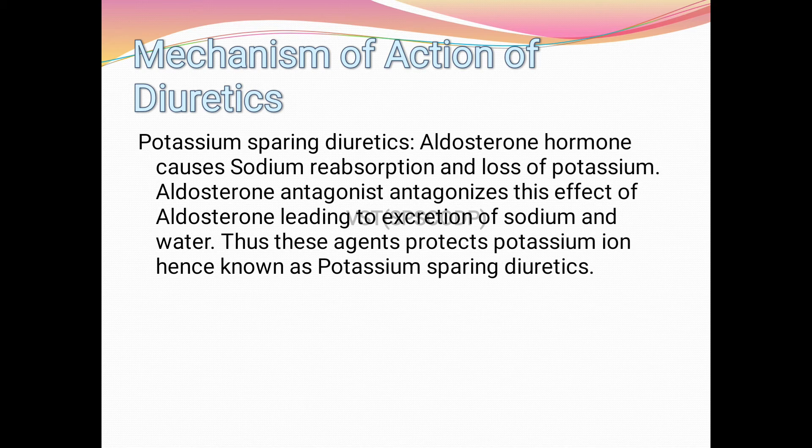Aldosterone antagonists antagonize the effect of aldosterone, leading to excretion of sodium and water. These agents protect potassium ions, hence they are known as potassium-sparing diuretics — potassium is not excreted from the blood capillaries into the nephron.